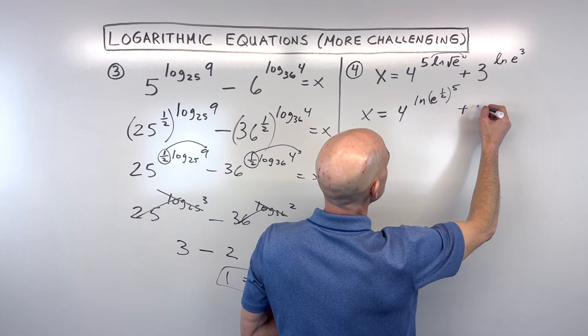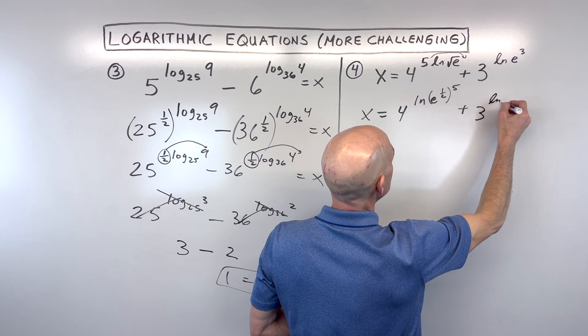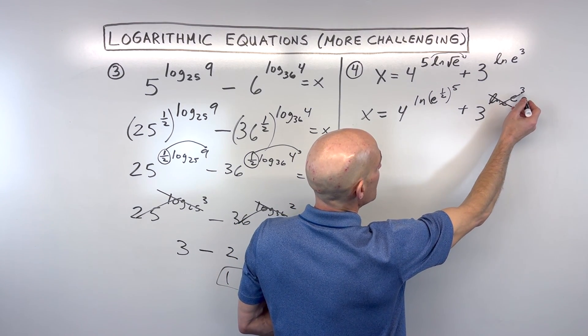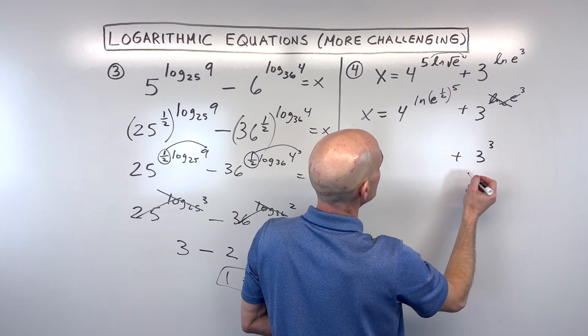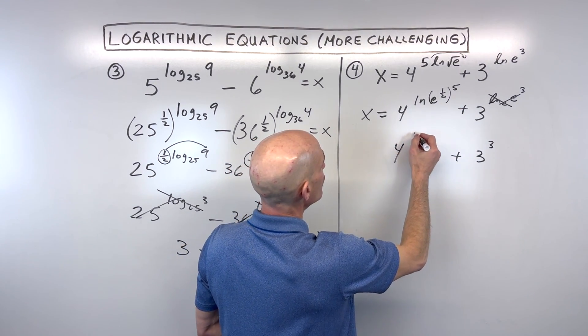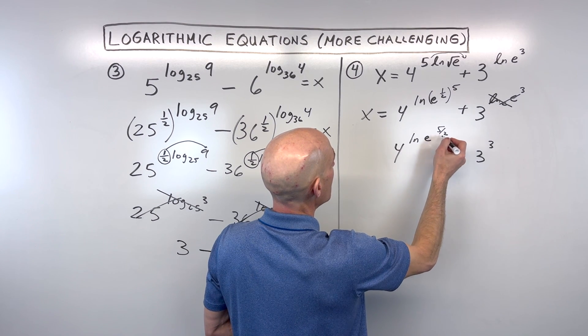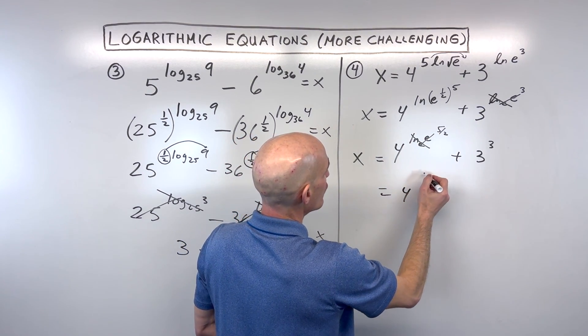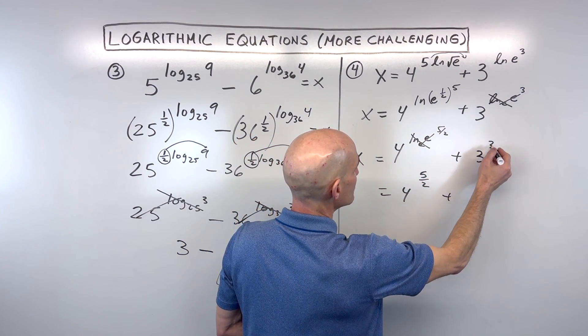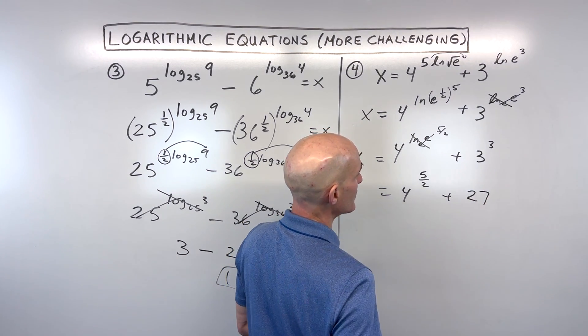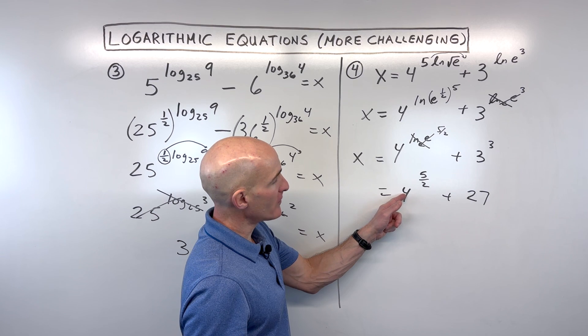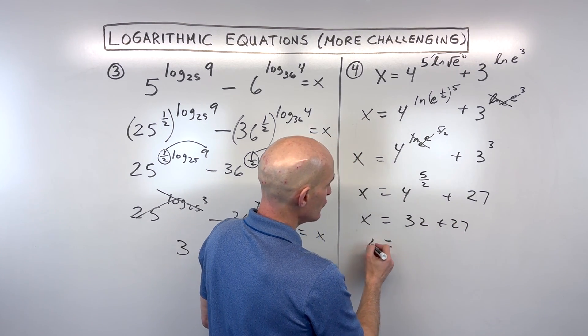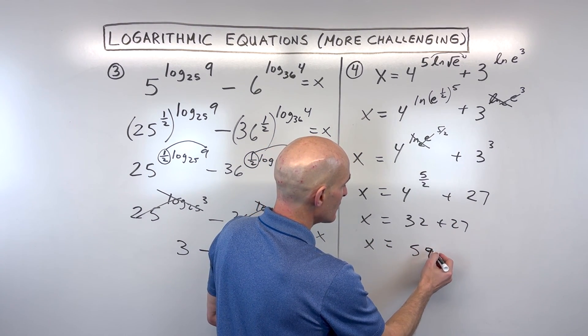But let's simplify this a little bit further here. So this one, we have natural log, which remember, natural log is base e, log base e, of e cubed. These are inverses of one another, because the bases are the same. And we just get 3 here. So this is really like 3 to the third power. Here we have 4 to the natural log of e to the 5 halves power. Of course, remember, natural log is log base e. And you can see that these are inverses of one another, leaving us with 4 to the 5 halves power plus 3 cubed, which is 3 times 3 times 3. And then this is saying, what's the square root of 4? That's 2. What's 2 to the 5th power? That's 32. And now we just have 32 plus 27, which is 59.